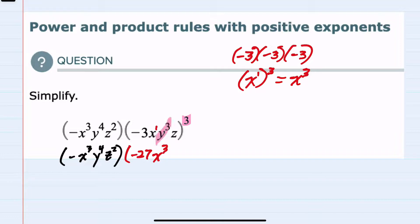Then the y to the third is also raised to the third power, so that would be y to the third raised to the third. Here, we again multiply our exponents. 3 times 3 would be 9, so this would be y to the ninth power.